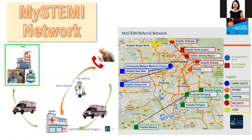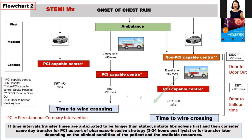We now have a MySTEMI network, mainly in the Klang Valley, with one in Penang and others starting in Terengganu and Johor. PCI-capable centers should be the destination. Door-to-balloon time of 90 minutes must be the target — ideally within 30 minutes is even better. If you cannot reach a PCI center, go to a non-PCI facility where fibrinolytic therapy can be started. The flow chart guides you: PCI-capable center if possible, otherwise fibrinolytic therapy to begin revascularization.